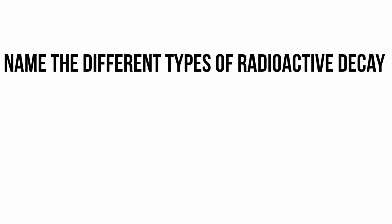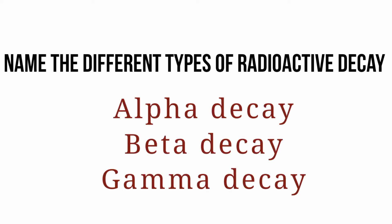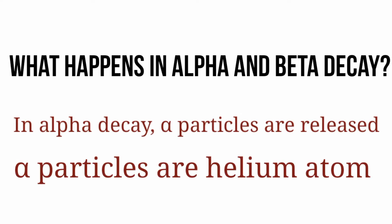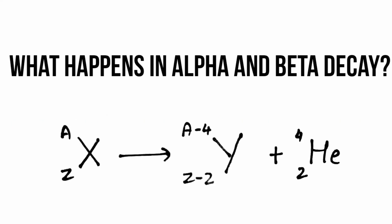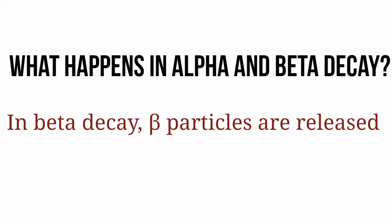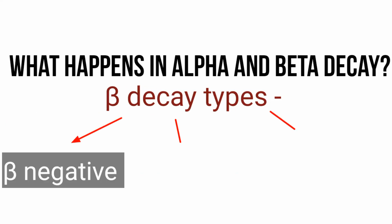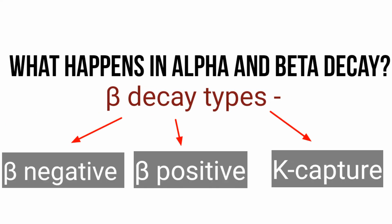Name the three types of radioactive decay: we have alpha decay, beta decay, and gamma decay. In alpha decay, alpha particles are released — alpha particles are helium atoms. In beta decay, beta particles are released, which are either electrons or positrons. We have three types of beta decay: beta negative, beta positive, and K-capture, also called electron capture.